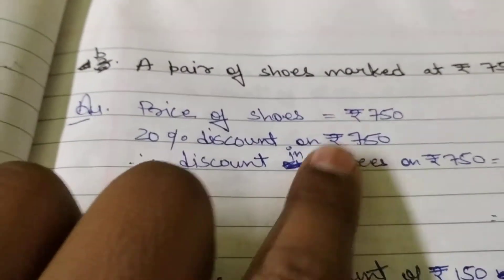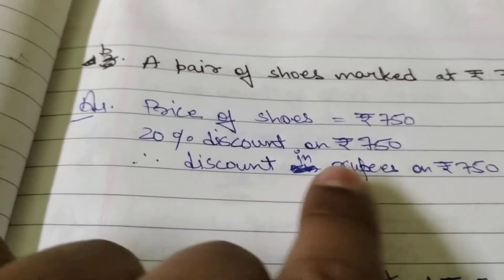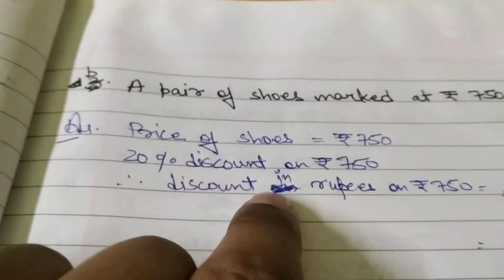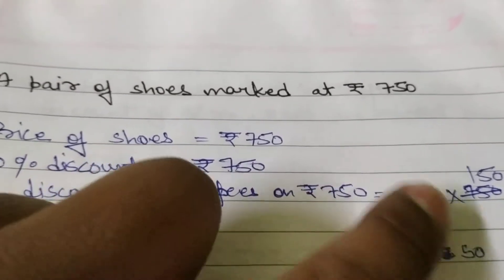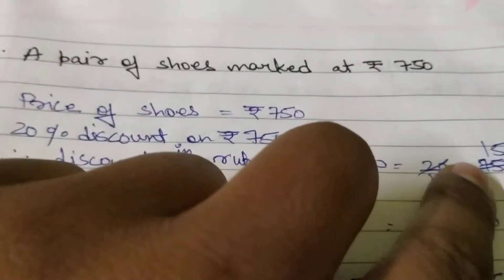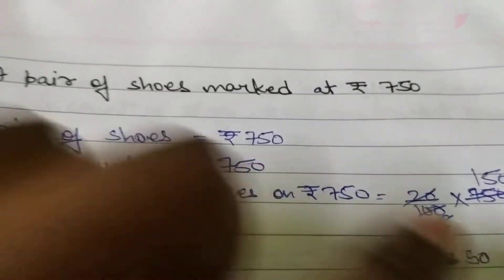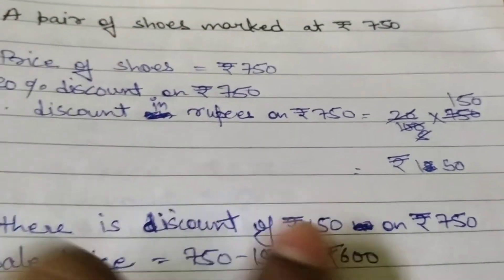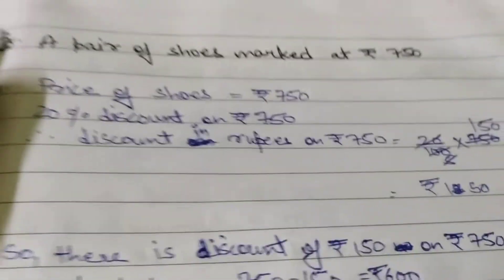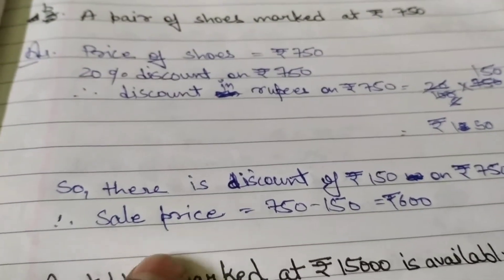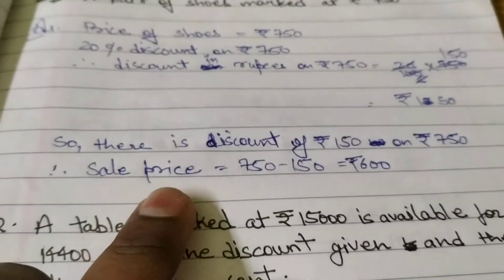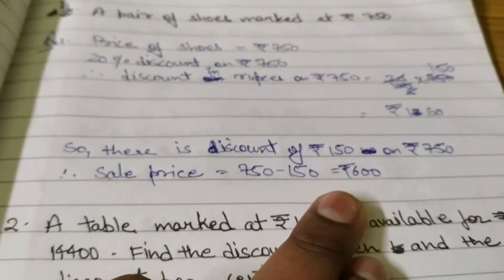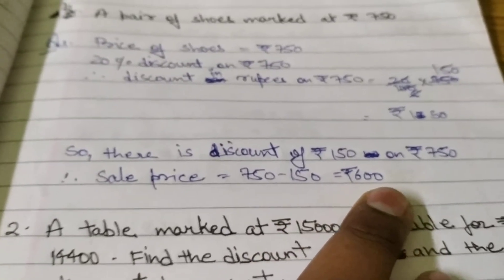Part C: a pair of shoes marked at rupees 750 with 20% discount. Discount in rupees equals 20% multiplied by 750, which equals rupees 150. So sale price equals marked price minus discount, that is 750 minus 150 equals rupees 600.